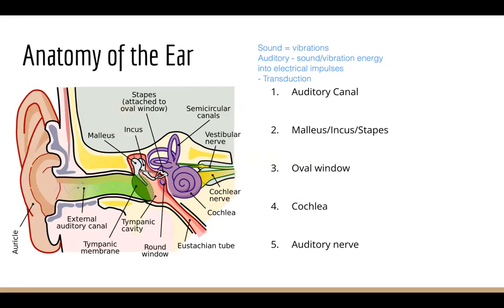Your tympanic membrane is basically your eardrum. The vibrations will vibrate your eardrum, which will cause the malleus, incus, and stapes to move against each other, which will cause the stapes to tap on something called your oval window.